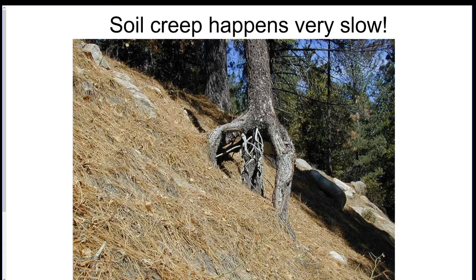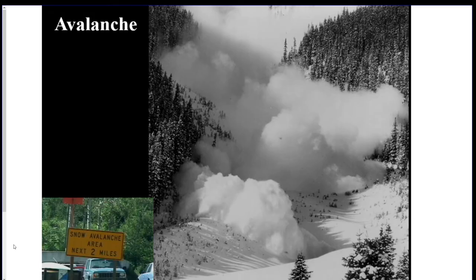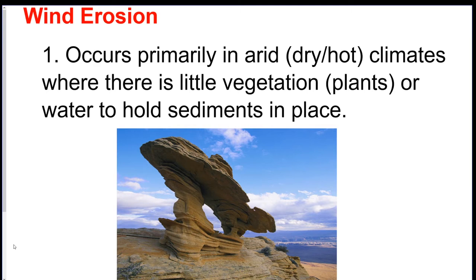Soil creep, landslides, avalanches — these mass movements expose the roots of plants as all the material moves down the mountain, making the ground very unstable. A tree won't be stabilized anymore because the ground moved out from underneath it; it doesn't have that tight soil to keep it in place. This is one of the effects of a landslide. That was gravity. The second way erosion can occur is from wind.